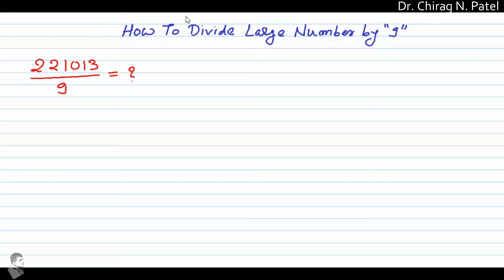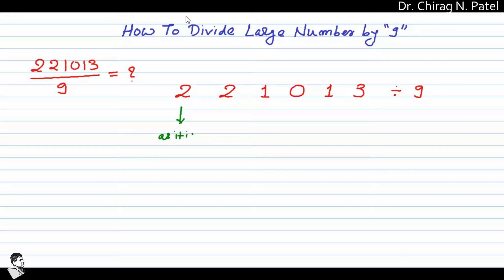To solve that, we use a math trick. Write down the number again — that is 2, 2, 1, 0, 1, and 3 — and that number is divided by 9. Now here we have to follow a procedure to get the perfect answer in a very easy way.